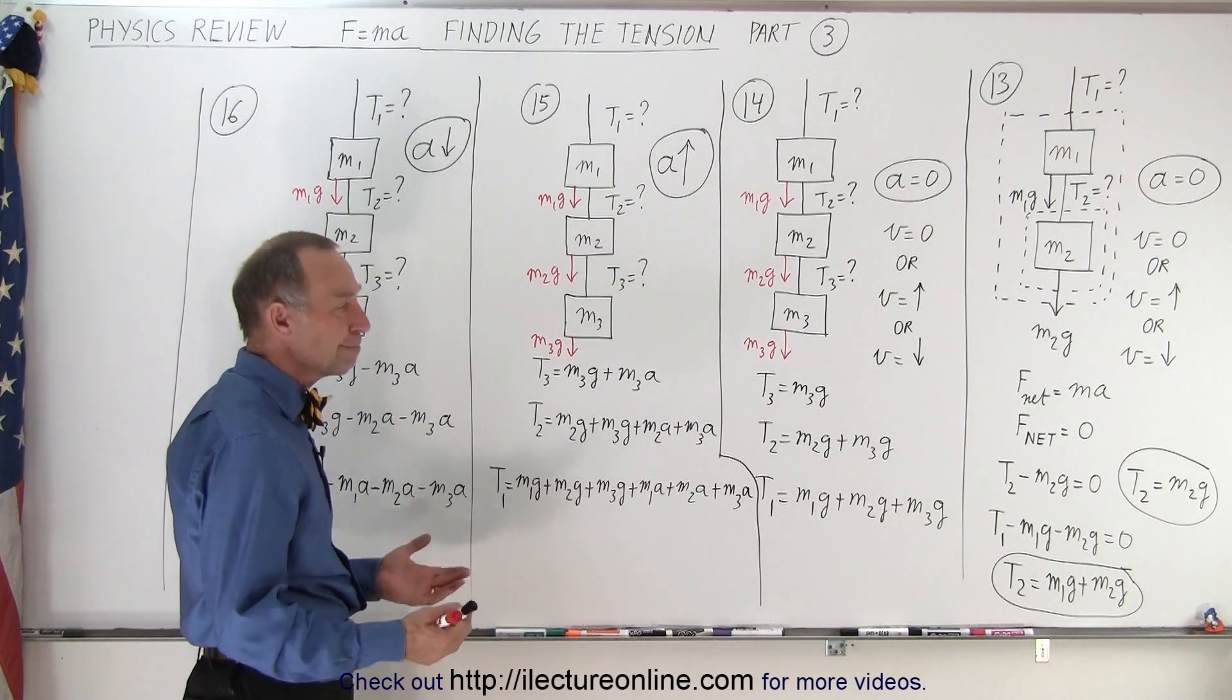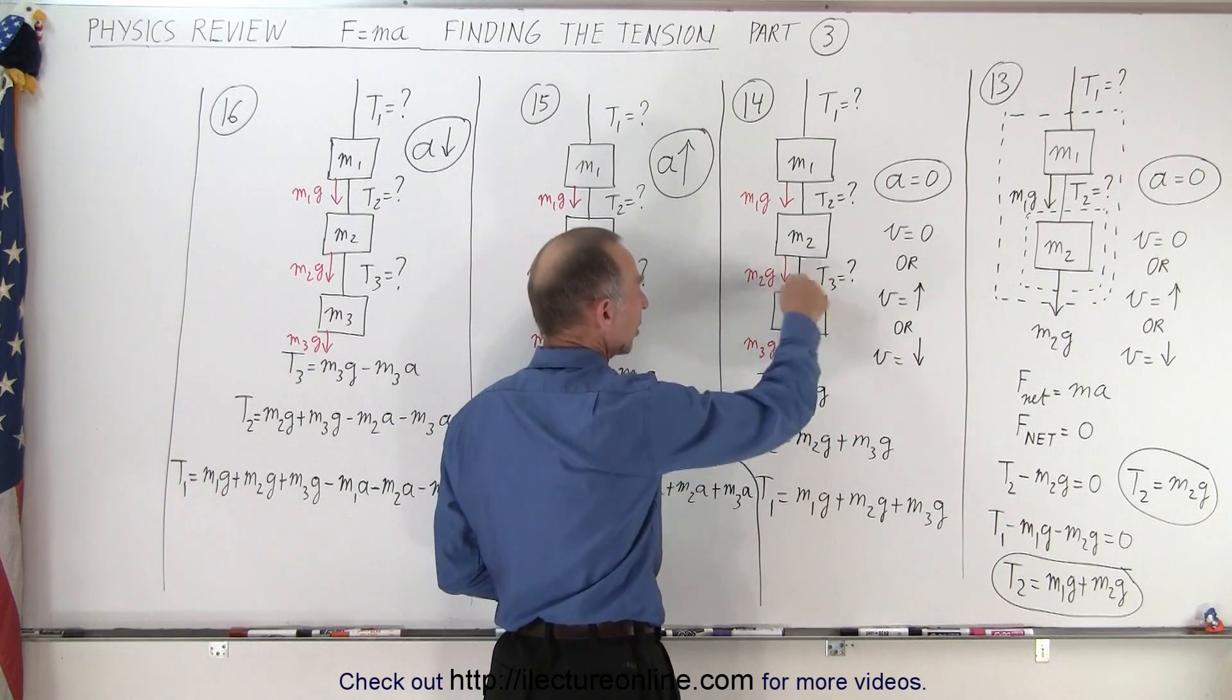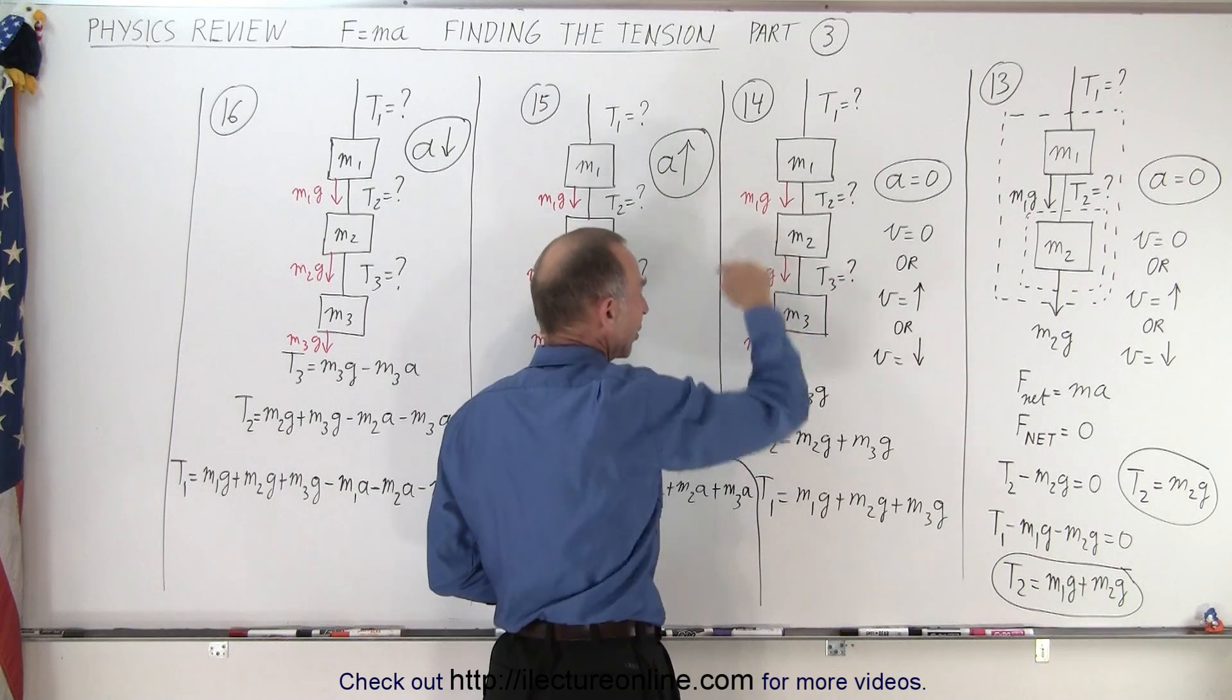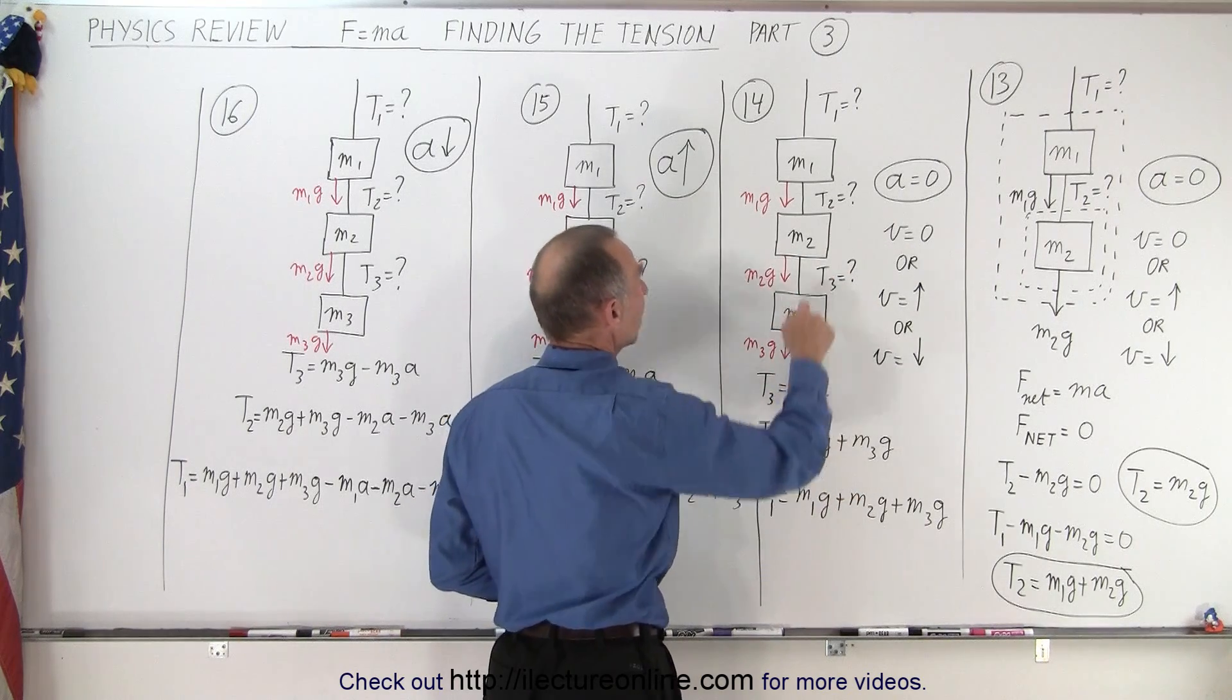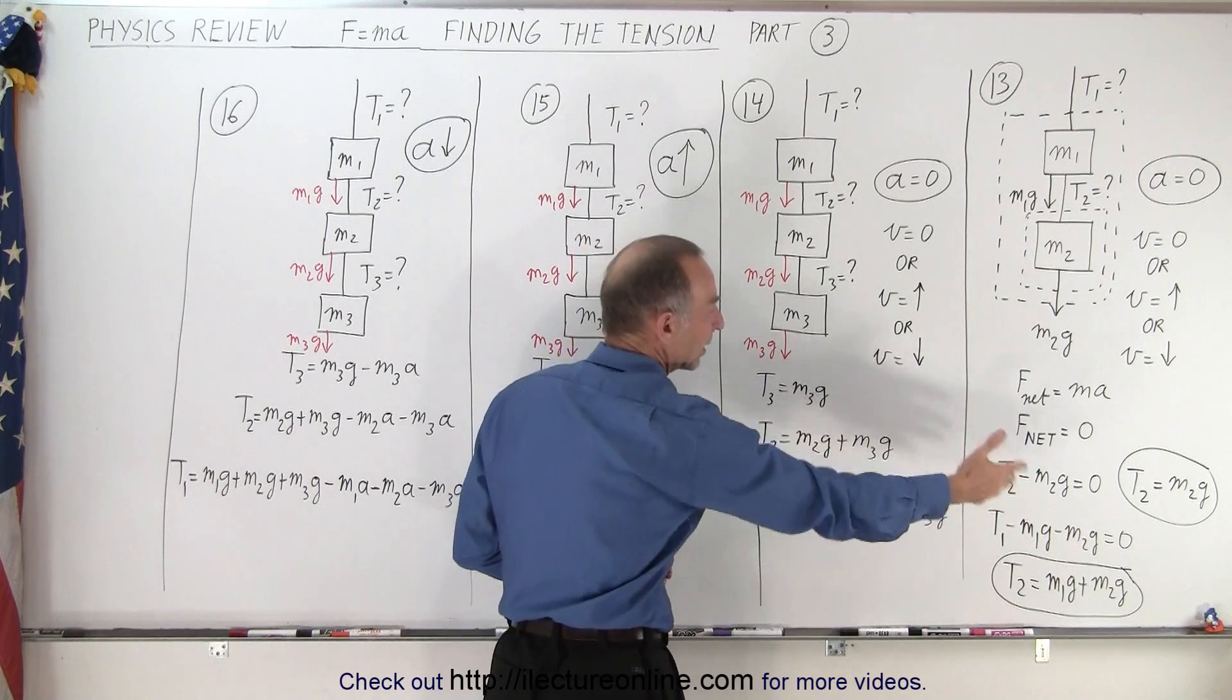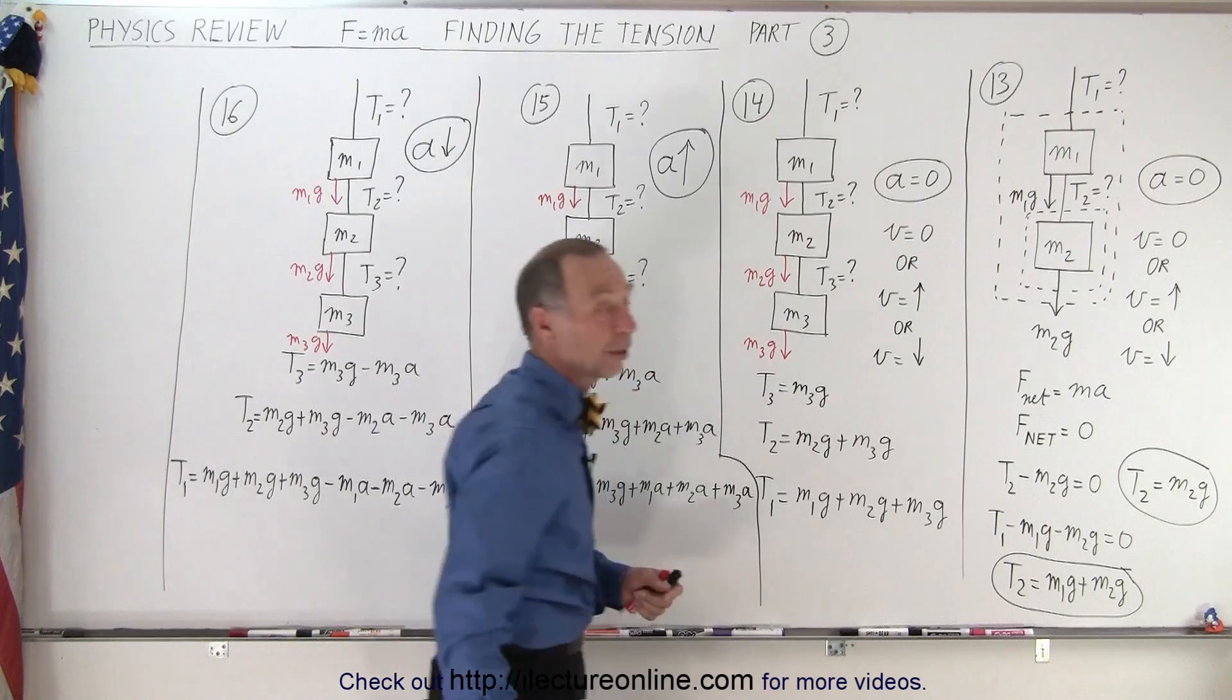If there's three objects, it makes no difference. The tension here will equal the weight of this object, M3G. The tension here will be equal to the weight of these two objects, M2G plus M3G, and the tension here will be equal to the weight of all three objects. So you get the exact same result with two objects and three objects, as long as there's no acceleration.